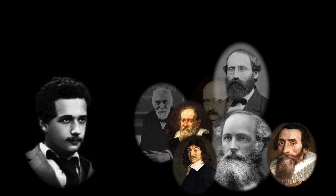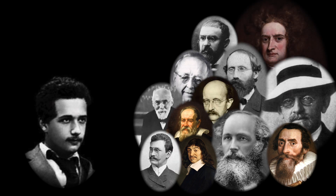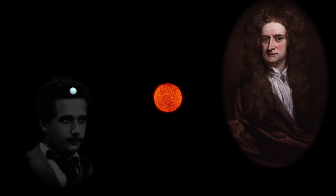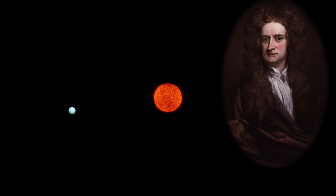When Einstein was developing general relativity, every other physicist still firmly believed in Newtonian mechanics. After all, it had never been disproved. Even when the meticulous observation of the trajectory of Uranus seemed to disprove Newton, physicists boldly kept faith in Newton, and rather explained this anomaly by the existence of an eighth planet of the solar system. They were right, and Neptune was discovered.